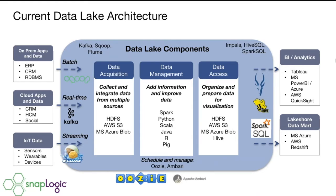This slide represents the confusion, noise, and complexity in the space today. Starting from the left, you have all these different data sources — on-prem apps, ERP, CRM, cloud apps, social media, and IoT data like machine data, sensor data, and wearables. Each source has a different way of pushing data out, whether batch or streaming. There's real-time, near real-time, Kafka — and tools like Sqoop and Flume — all part of the discussion.